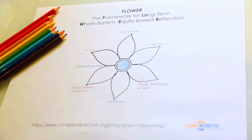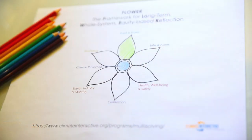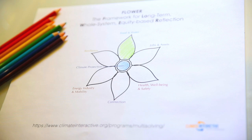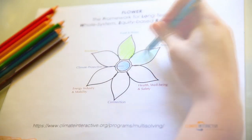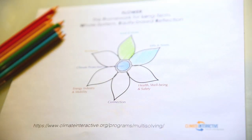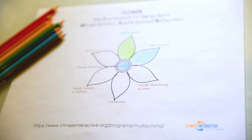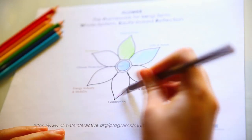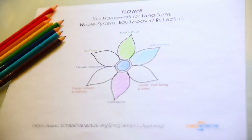We know this project helps people access fresh local produce, which means we can color in the food and water petal. This organization is helping refugees become small business owners, meaning we can color in the jobs and assets petal. There isn't much for health, well-being, and safety outside of the food benefits, so let's move on. As for connection, this project helps refugees become settled in their new communities, so let's shade in that petal. There aren't any obvious benefits in energy, industry, and mobility, so we'll leave that one blank.